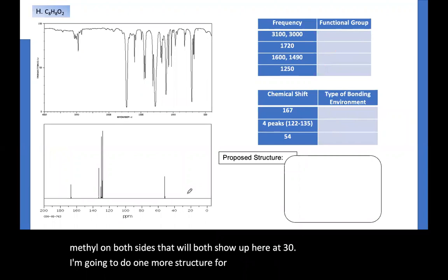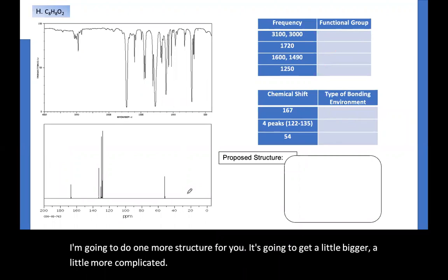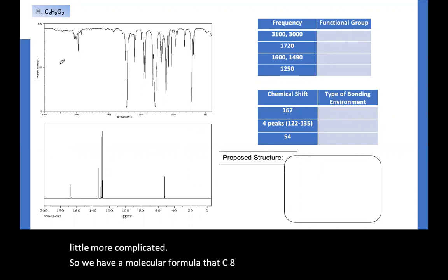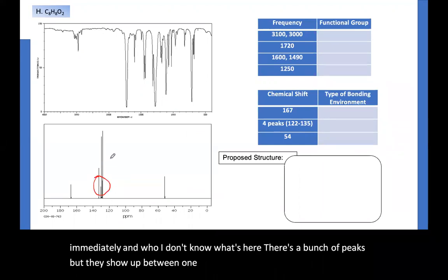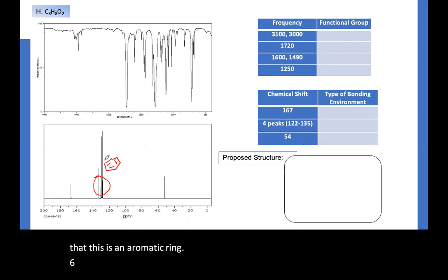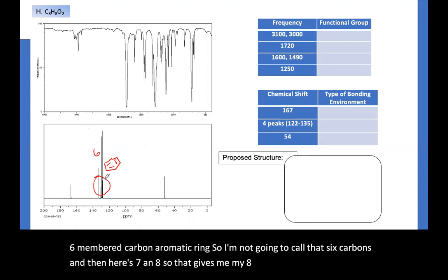Now I'm going to do one more structure for you. It's going to get a little bigger, a little more complicated. So we have a molecular formula that's C8H8O2. And I go look at my carbons immediately. And I don't know what's here. There's a bunch of peaks, but they show up between 120 and 140. So I'm going to assume right now that this is an aromatic ring, six-membered carbon aromatic ring. So I'm going to call that six carbons. And then here's seven and eight. So that gives me my eight carbons.